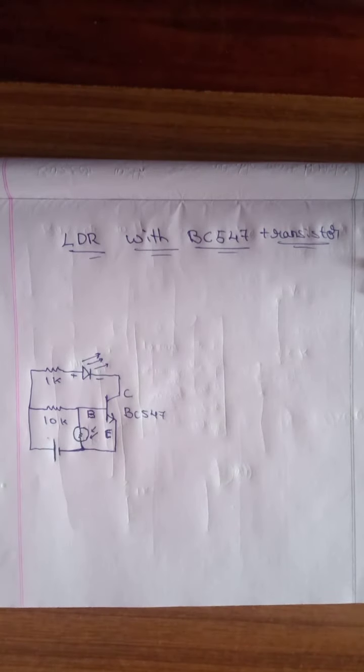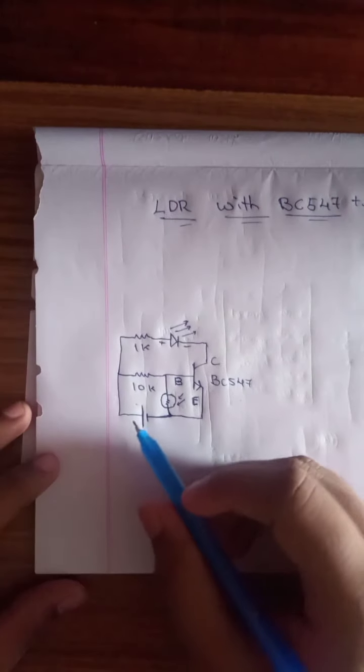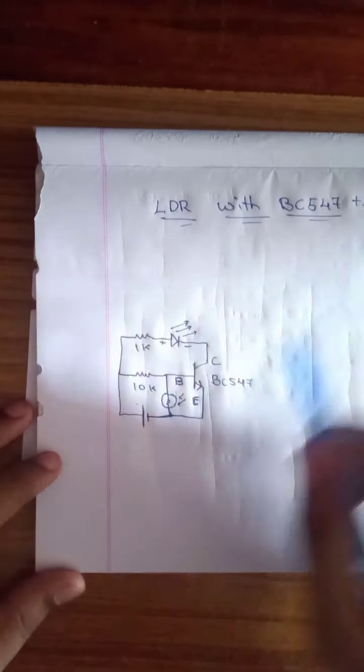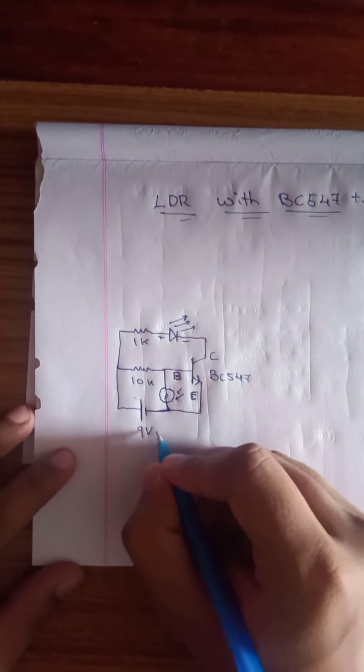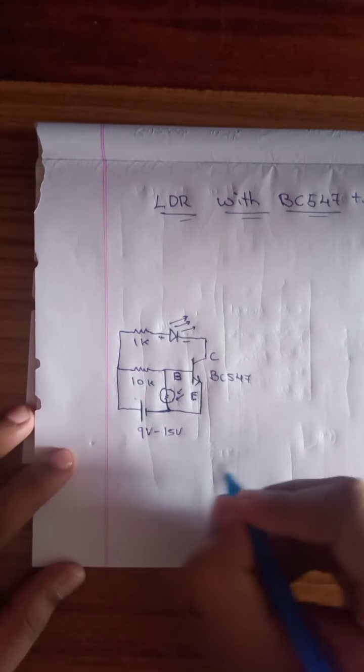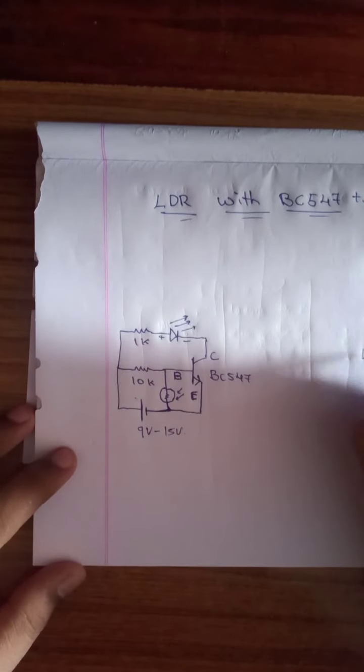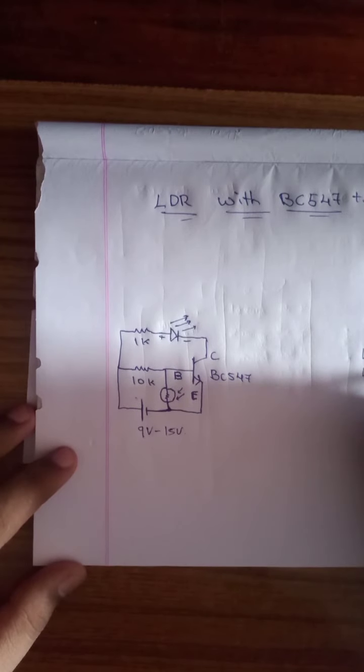The circuit as shown in this figure gives us the LDR with BC547 transistor. In this circuit, the components which we use: a single 9V to 15V supply can be used, an LDR, LED of 5mm.